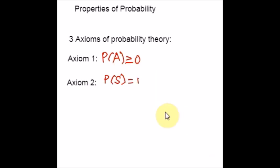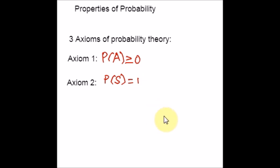The second axiom says that the probability that at least one of all the possible outcomes of a process will occur is 1, such as when rolling a die. Now let us move to axiom number 3.